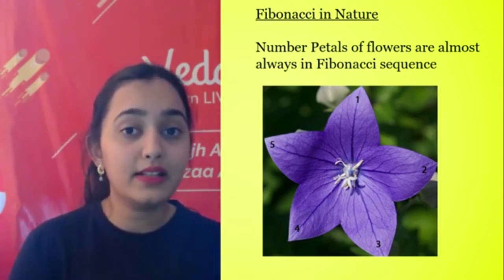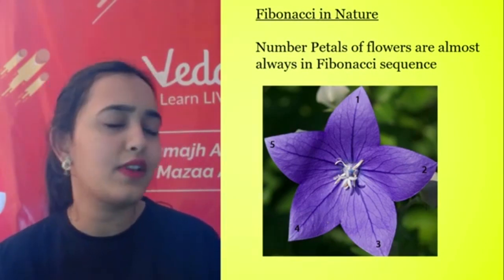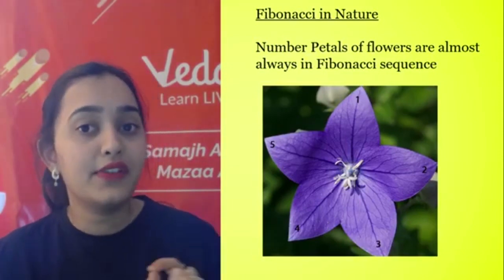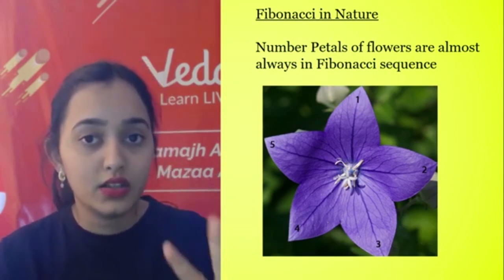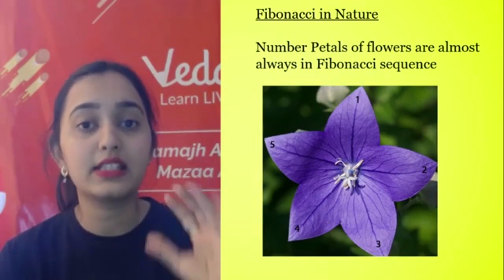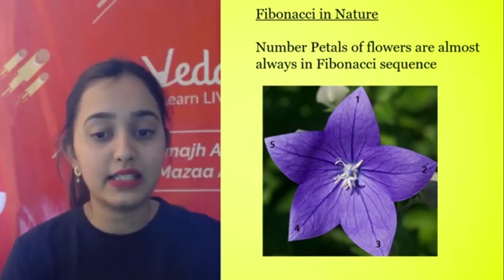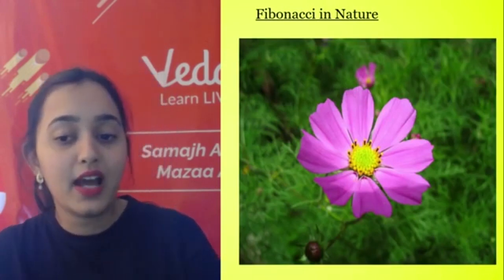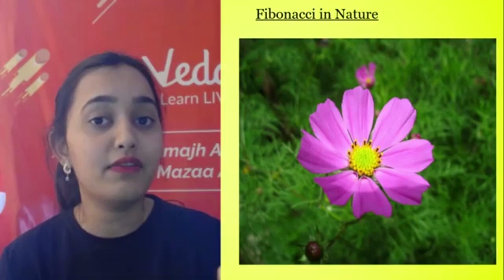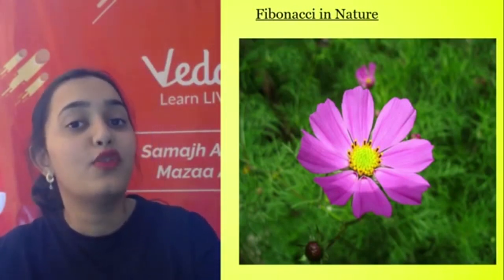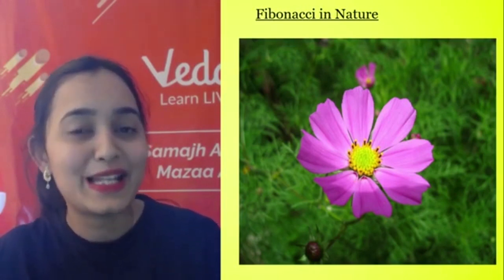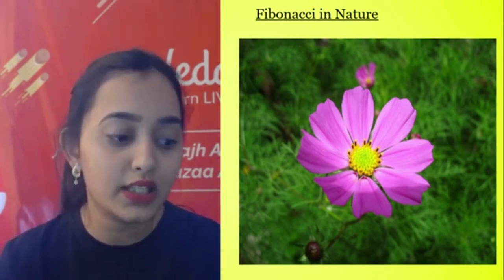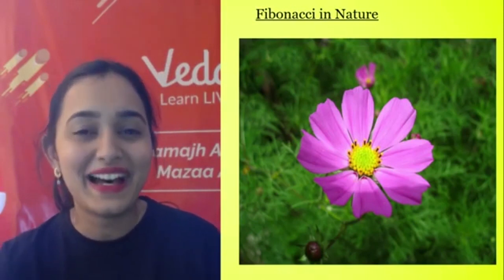Now, where does the Fibonacci series appear in nature? Did you know that flower petals also follow the Fibonacci series? Whenever you count the petals of a flower, the number will be 1, 2, 3, 5, 8, 13, or 21. For example, this particular flower has 5 petals, a sunflower has 21 petals, and this pink flower is made up of 8 petals. So almost every flower follows the Fibonacci sequence — amazing, right?